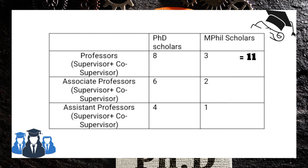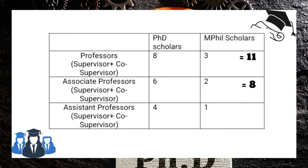An associate professor can guide a maximum of six scholars in co-supervisory and supervisory roles combined, and two MPhil scholars. An assistant professor can guide a maximum of four PhD scholars and one MPhil scholar, for a total of five scholars — both as co-supervisor and supervisor.